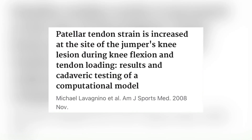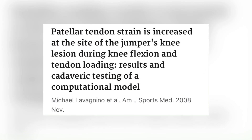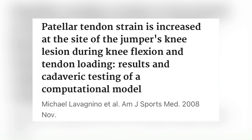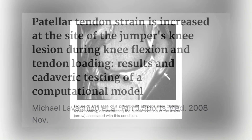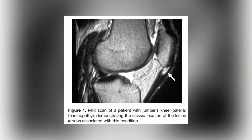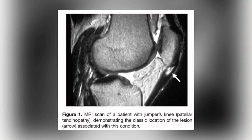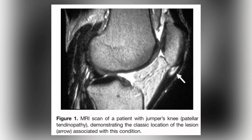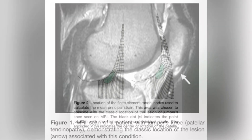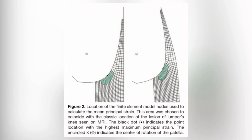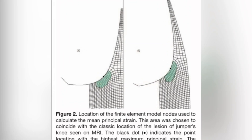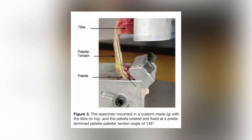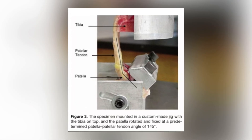This study used a two-dimensional computational finite element model of the patella-patellar tendon complex with five human cadavers to look at how we get the load through that one area, which is where we would be experiencing the jumper's knee and the structural abnormalities.